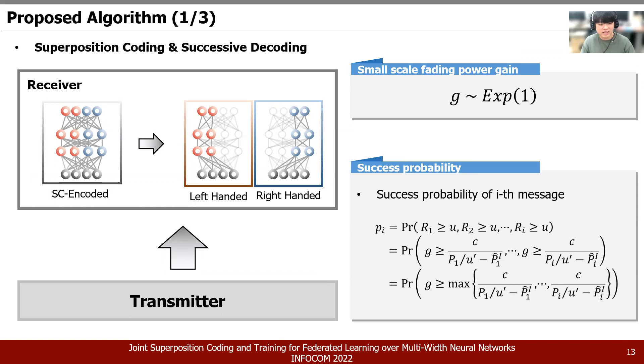And for successive decoding, at the model's receiver, the SC encoded message is supposed to be successively reconstructed by first decoding the stronger signal and then cancelling out the reconstructed signal. When modeling, we implement our communication network with Rayleigh fading and the small-scale fading power gain G, and it is assumed to have an exponential distribution. And we implement the final equation that represents the success probability of I's message on our communication network. We can know that decoding of the next message is available only when the decoding of the previous message is successful.